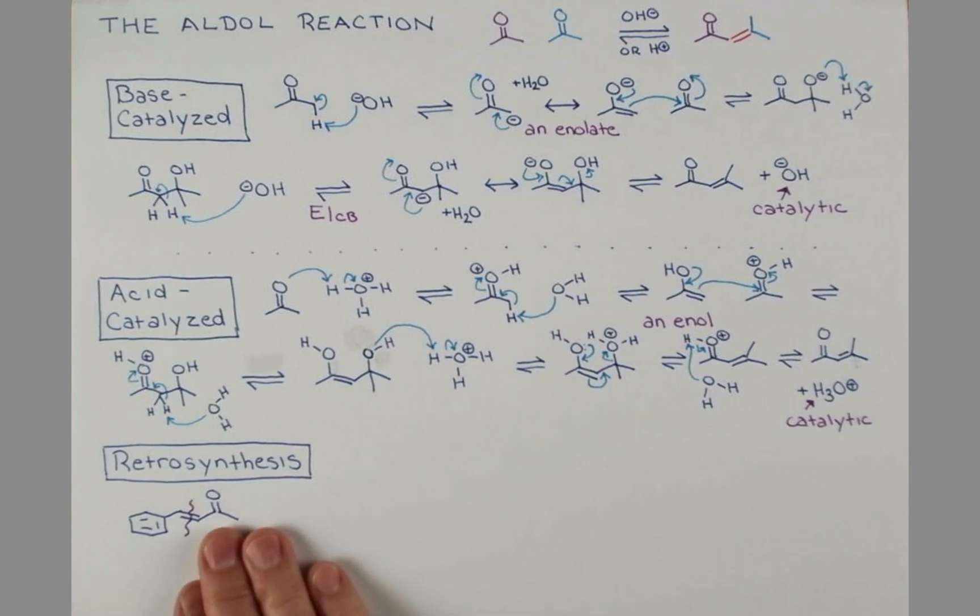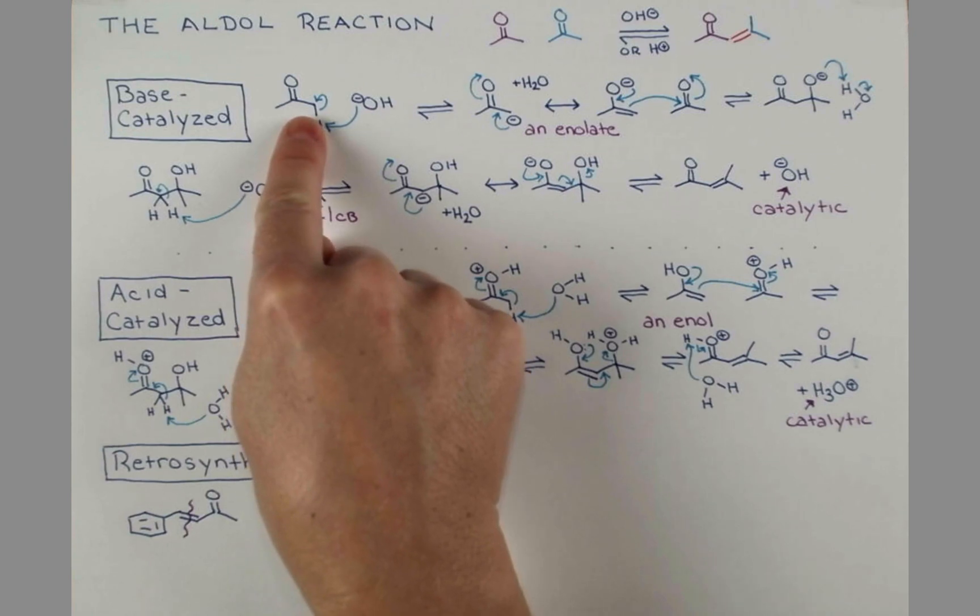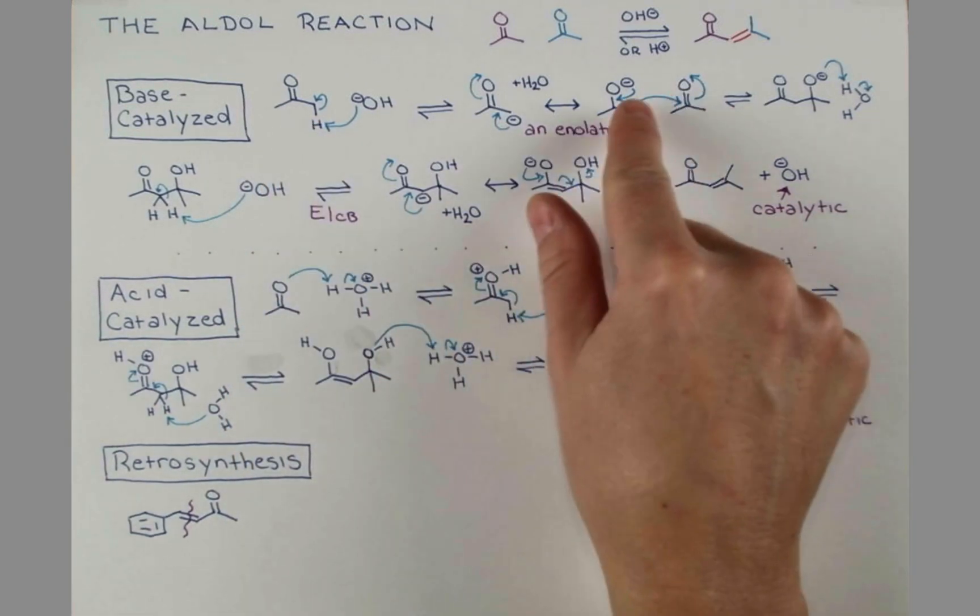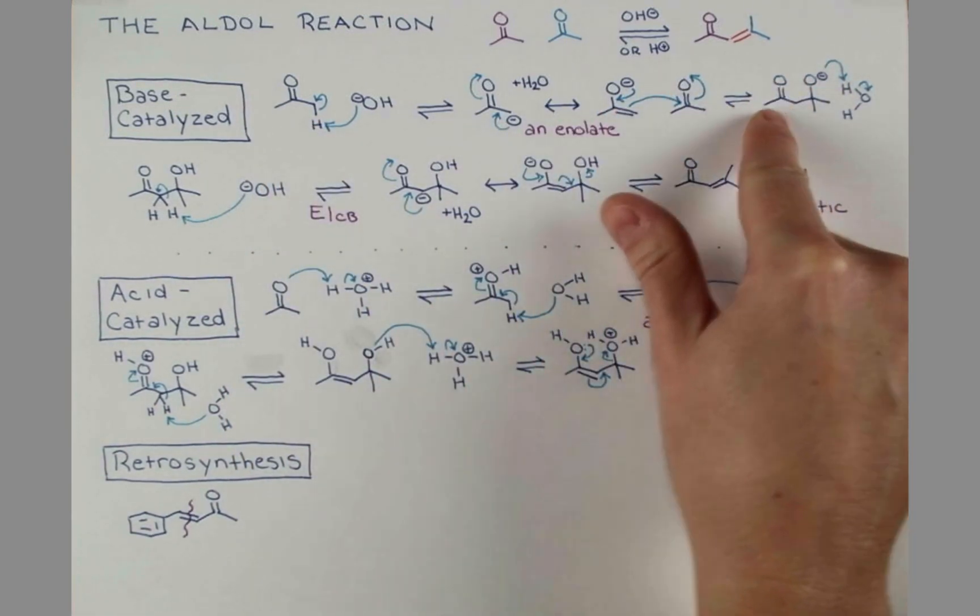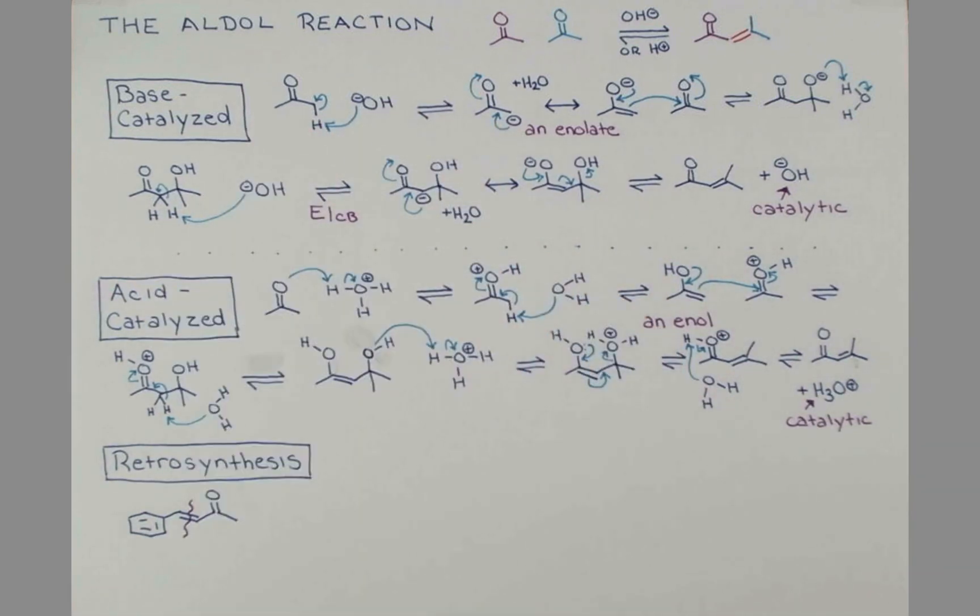Let's consider this side first. We have our carbonyl here. And the side that enolizes attacks and retains the carbonyl group. So this is coming from the side that enolized here. So for the carbonyl-containing side, we just need to redraw everything up to the squiggle. Here's our retrosynthetic arrow. And this side came from acetone once again.